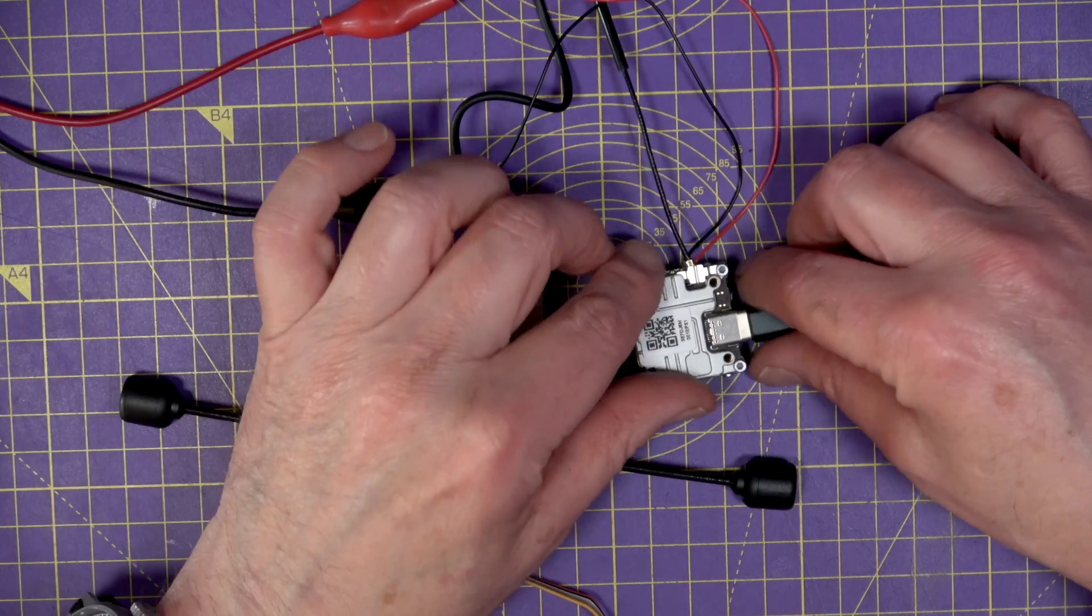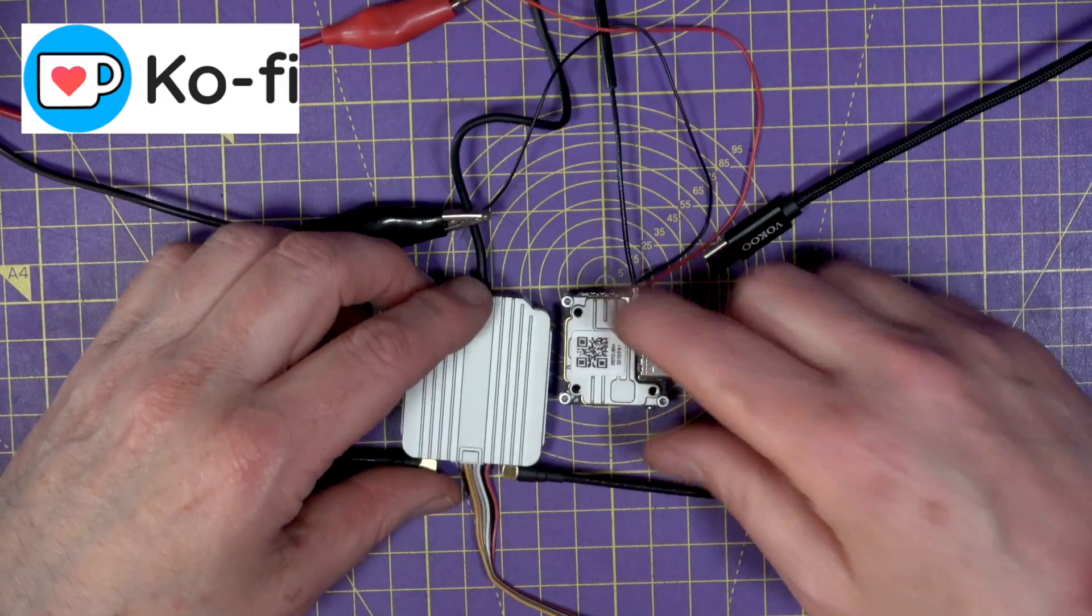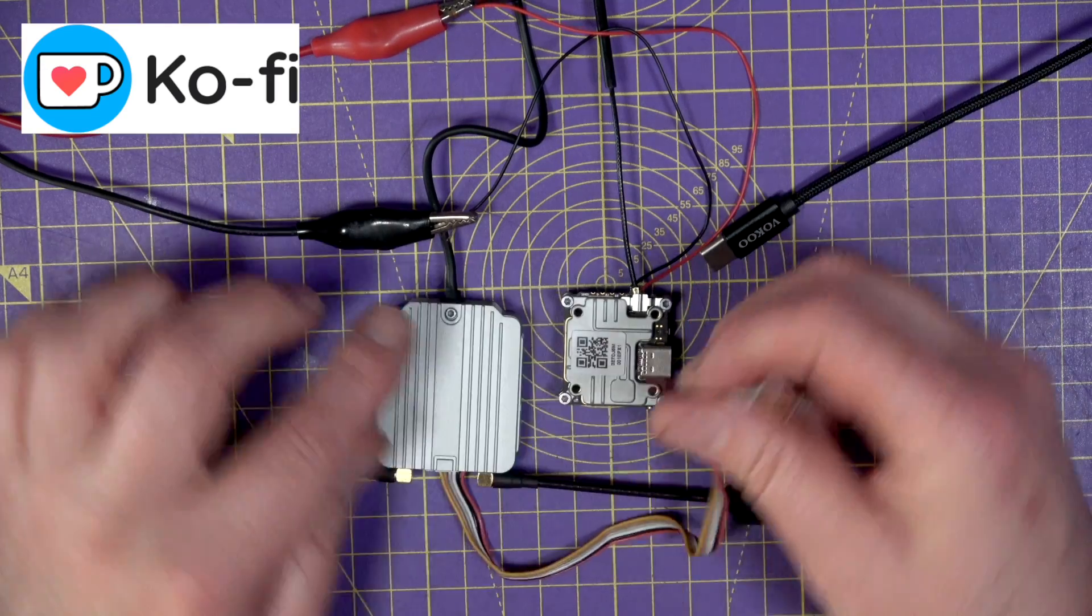So that's it, it's as simple as that. You can do the same thing with the air unit, but you just connect power to the red and black on here.